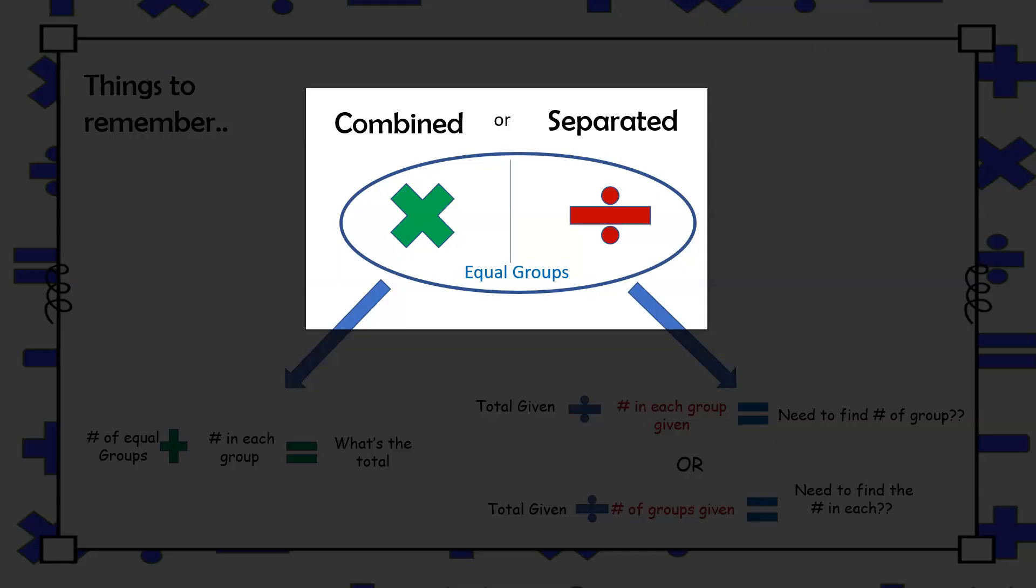With multiplication, equal groups are being combined, whereas with division, an amount is separated into equal groups.